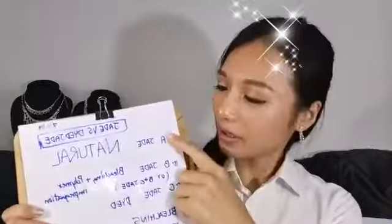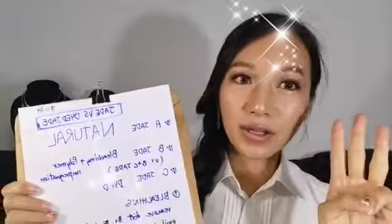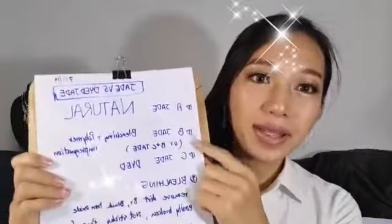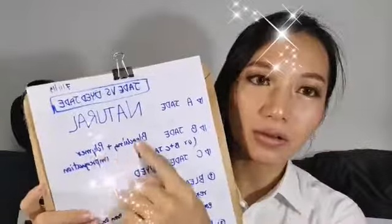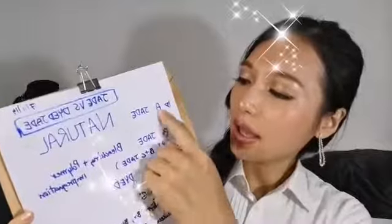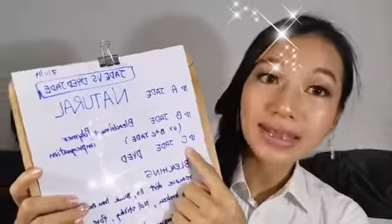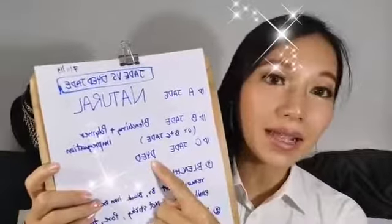We separate three types: A jade, B jade, and C jade. A jade means natural jade. B jade is bleaching and polymer impregnation. And C jade is dyed jade — C is dyed jade.